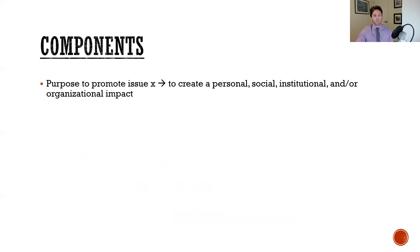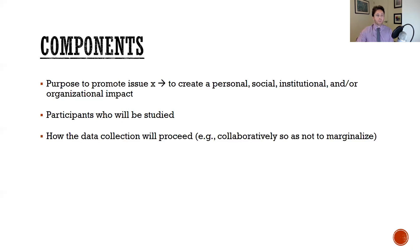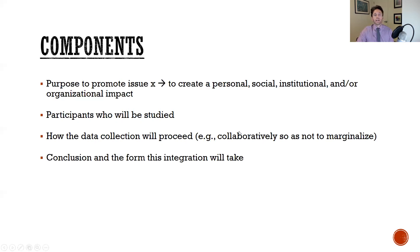Some components to consider in this overall design: first, the purpose — to promote a particular issue that creates a personal, social, institutional, and organizational impact. Second, the participants — who will be studied and examined. Third, how we will proceed with data collection both quantitatively and qualitatively, being sensitive to the population and never further marginalizing that group. And lastly, the conclusion and how we go about the integration process at the end of the interpretation phase.